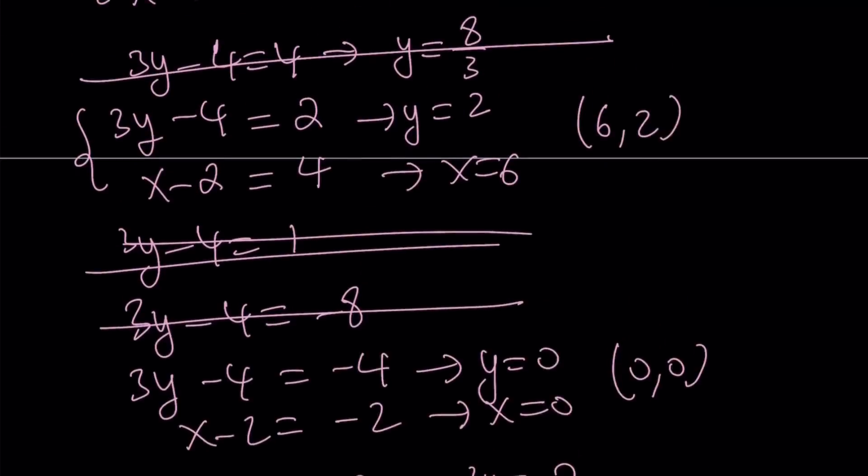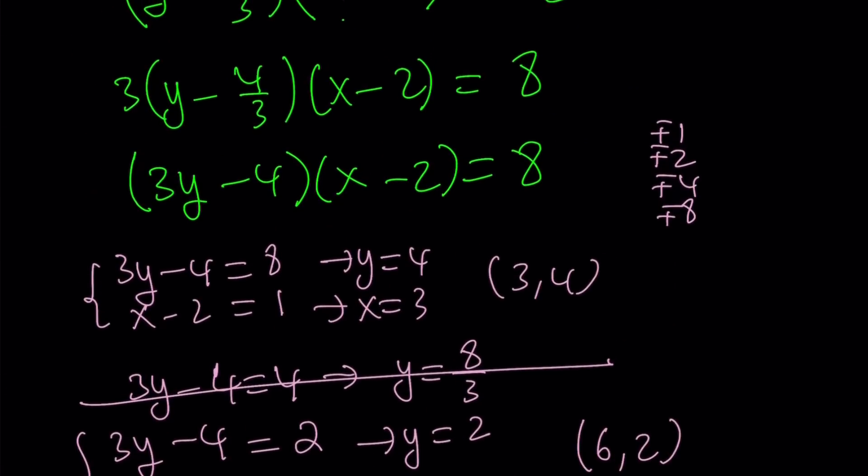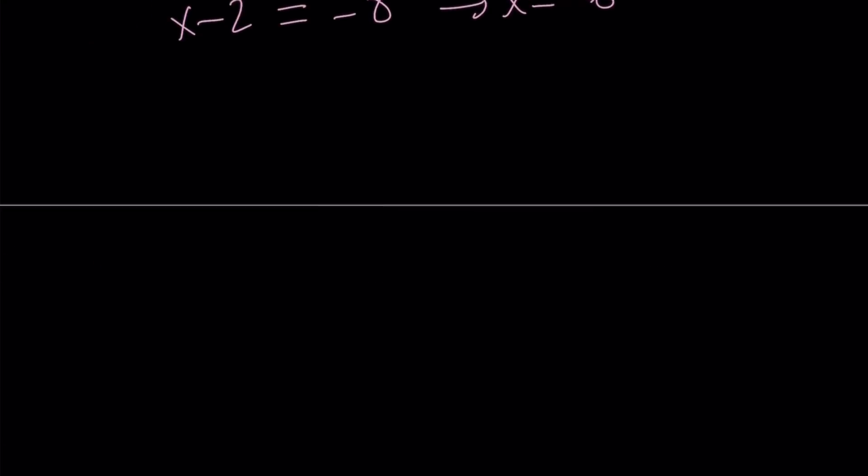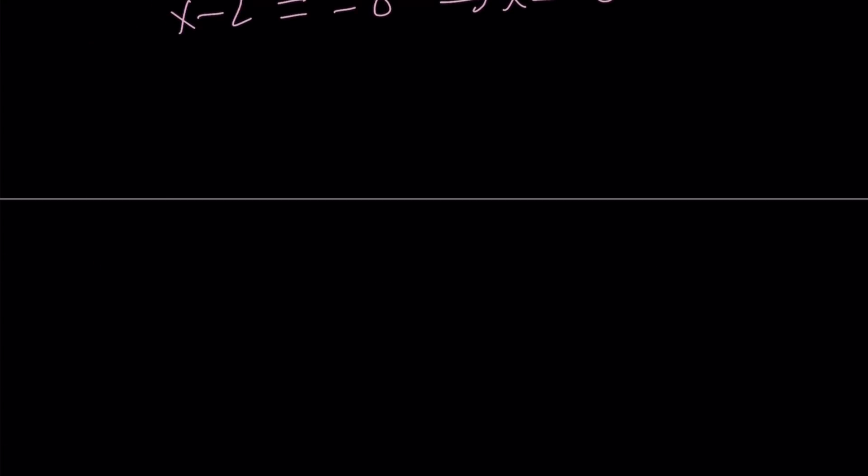And there are no other solutions because we considered all cases where 8 can be factored into. So let's go ahead and put this all together. Our solution set is going to be made up of negative 6 comma 1, 3 comma 4, and 6 comma 2. So that's pretty much going to be all the solutions. There are three solutions. They're all integers.